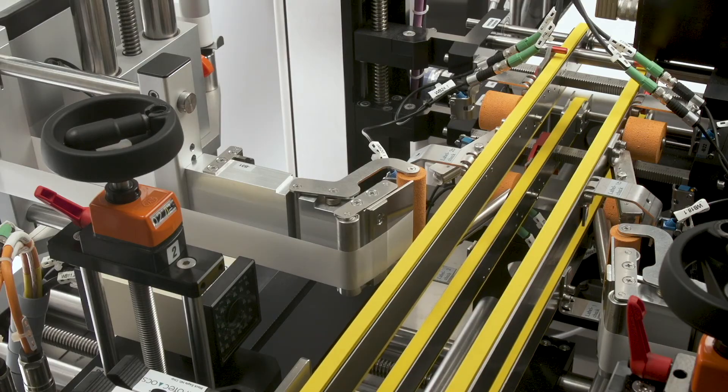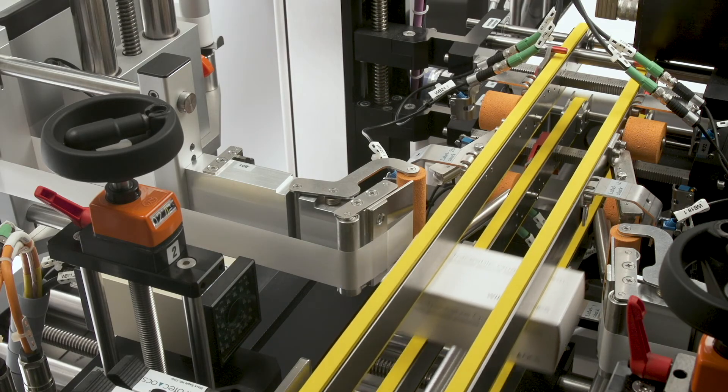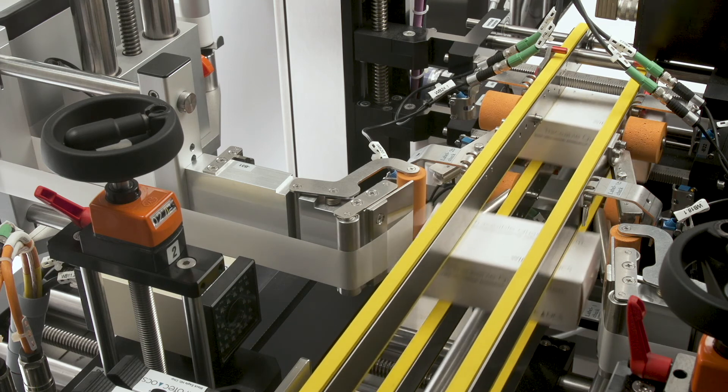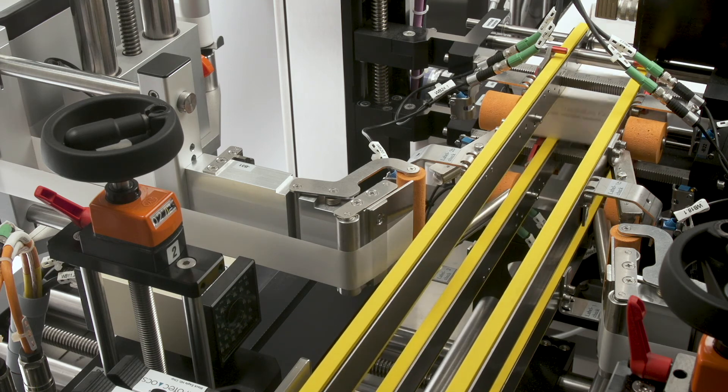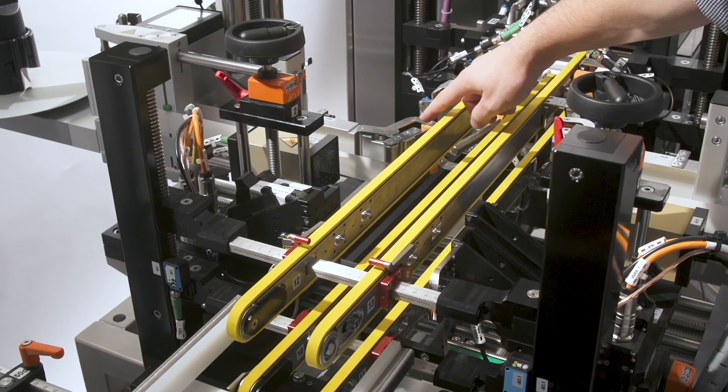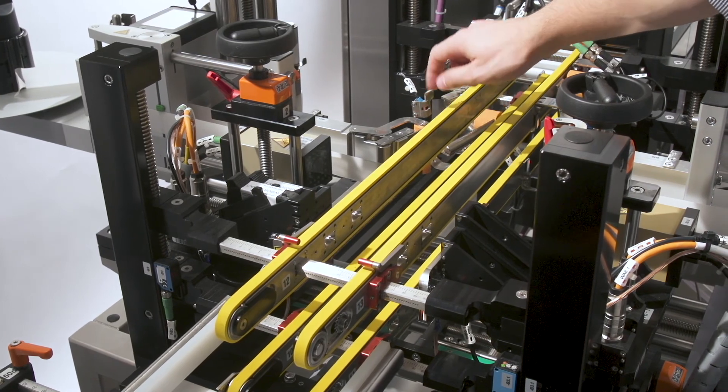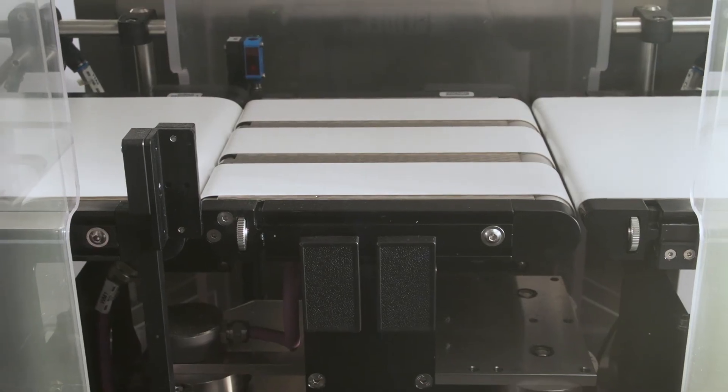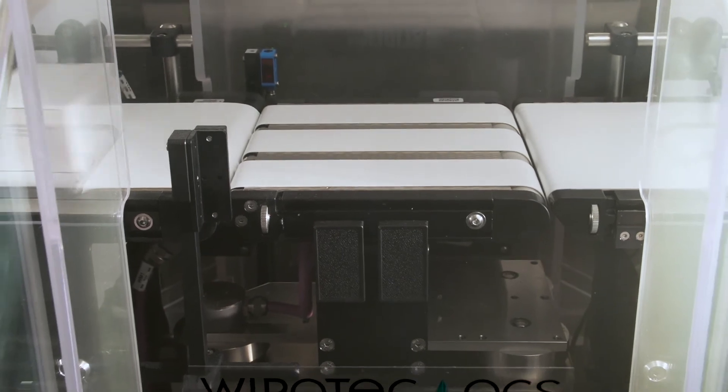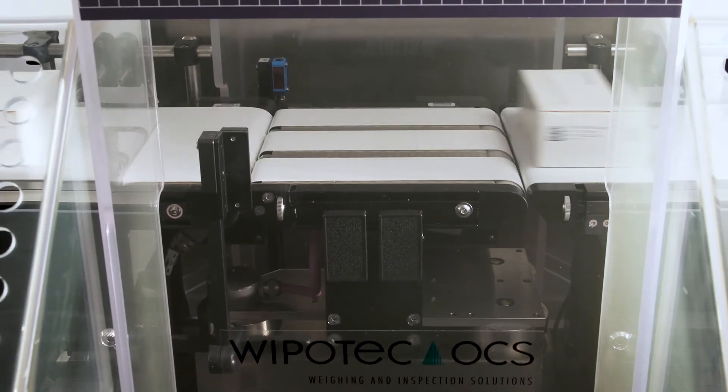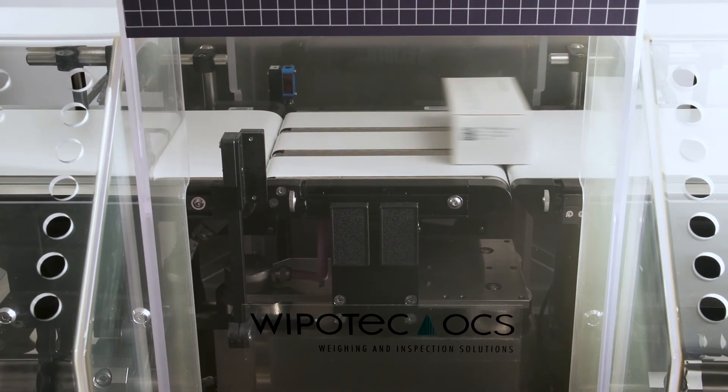Once the code is printed on the product, the camera will then verify the code to ensure the readability of each serialization code. A tamper evidence seal is then placed on the product to seal insertion flaps. The packaged and sealed product is then passed through the checkweigher to ensure the product is the appropriate weight.